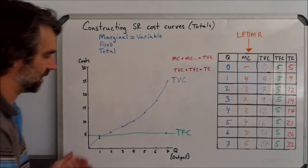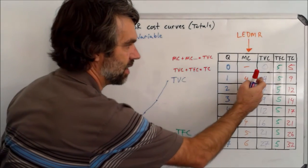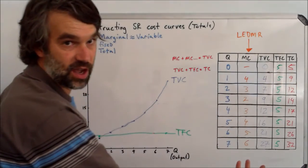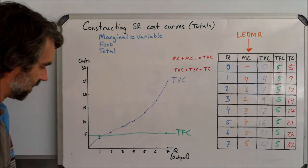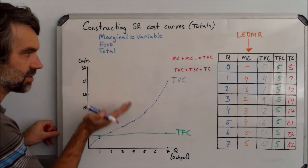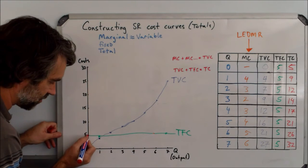The total cost curve is actually, remember, the only difference between this number and that number is the five of the total fixed costs in between. So what we can do from this is this curve, the total variable cost curve, is just going to be translated up by five. So this point moves up by five, which is, of course, there.